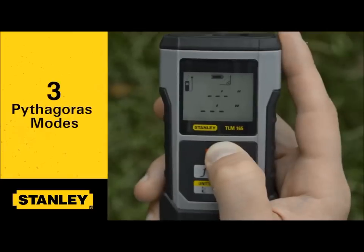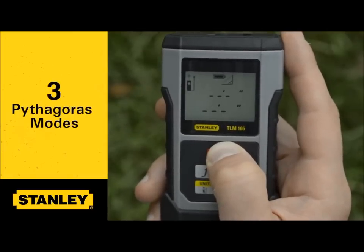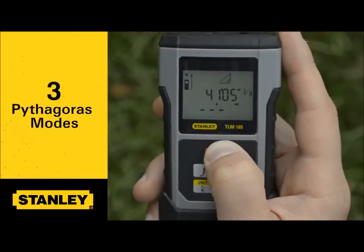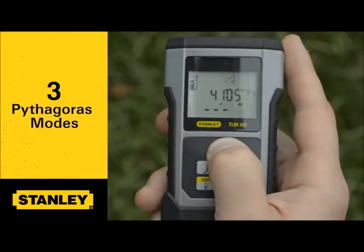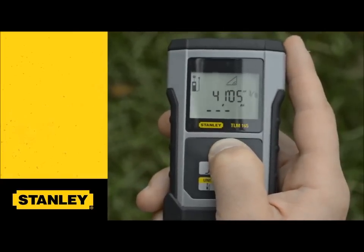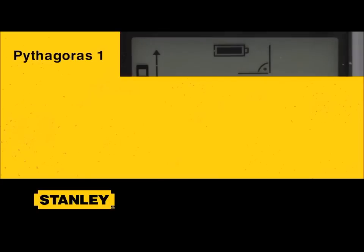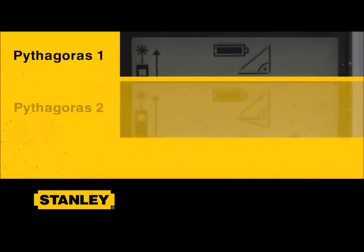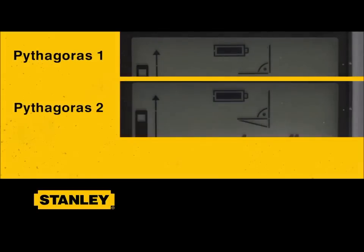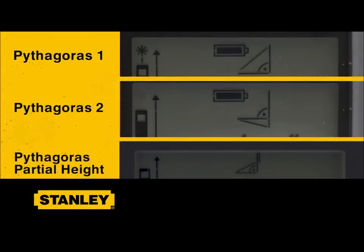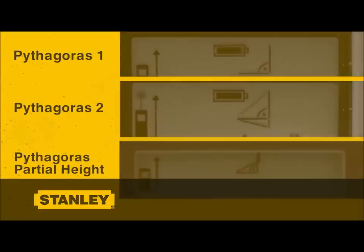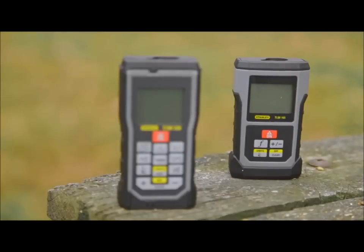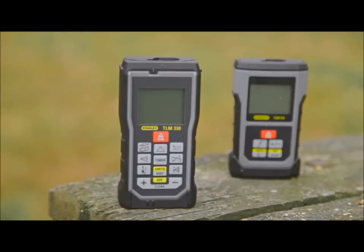Furthermore, there are three different Pythagoras modes for you to use depending on your situation: Pythagoras 1, Pythagoras 2, and Pythagoras partial height. This video will also explain when to use each one.